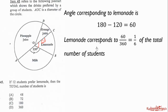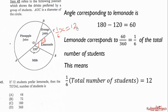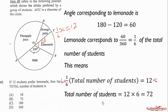Now that we know lemonade corresponds to 1/6 of the total, and 12 students prefer lemonade, we set up the equation: (1/6) × x = 12. Multiplying both sides by 6 gives x = 72. Therefore the total number of students is 72, and the correct option is B.